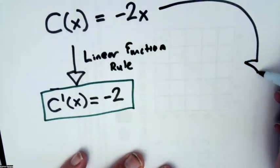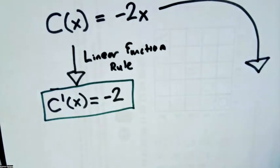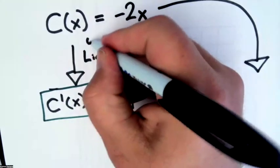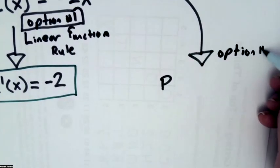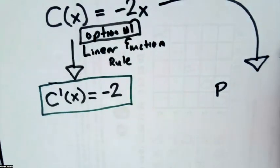Then we could, if we wanted to, do it with product rule. So this is option 1, this is the linear function rule. Option 2 is going to be to do product rule.